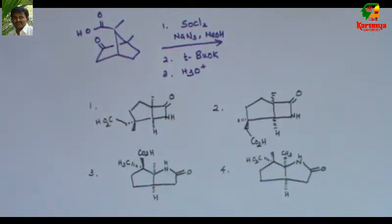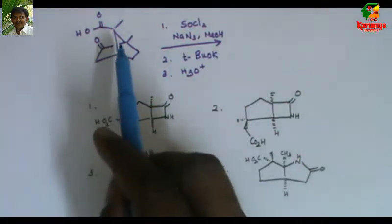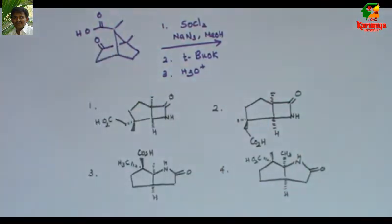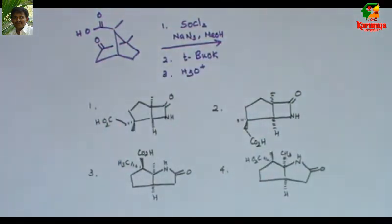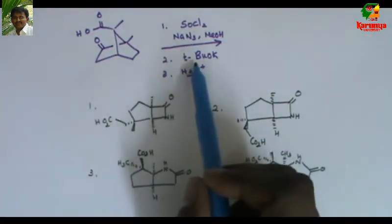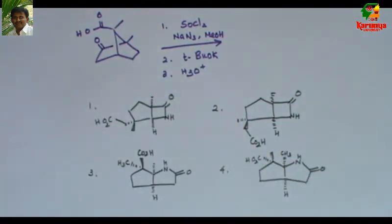Today I'm going to solve a problem on Curtius rearrangement. Here is the problem: when this bicyclic carboxylic acid is treated with thionyl chloride and sodium azide, followed by potassium tertiary butoxide and then hydrolysis, what is the product?